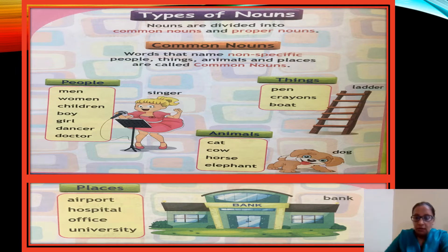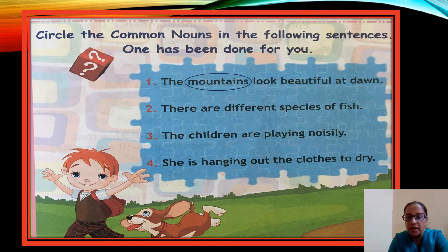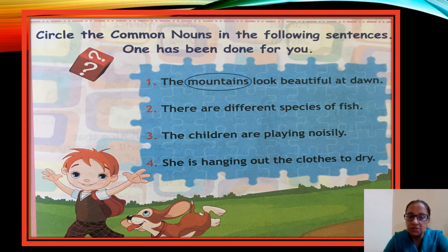Now let's do the given exercise for common nouns: circle the common nouns in the following sentences; one has been done for you. Number one: 'The mountains look beautiful at dawn.' Mountains — we are talking about mountains in general, no particular name is given — so it is a common noun, and that is why 'mountains' has been circled.